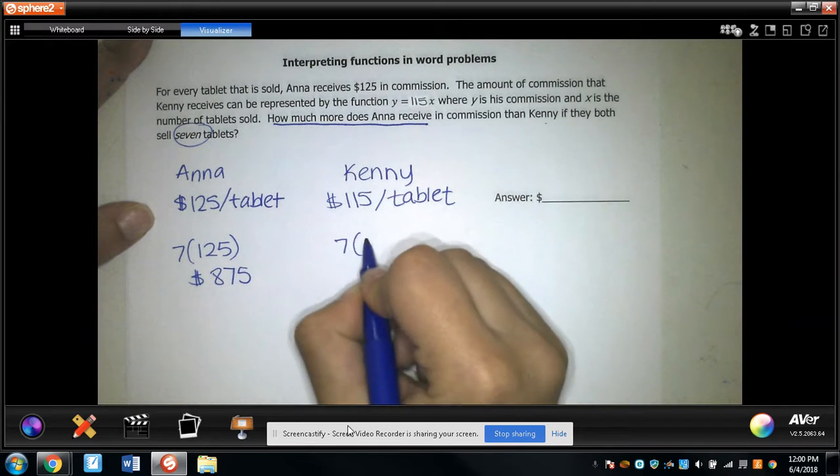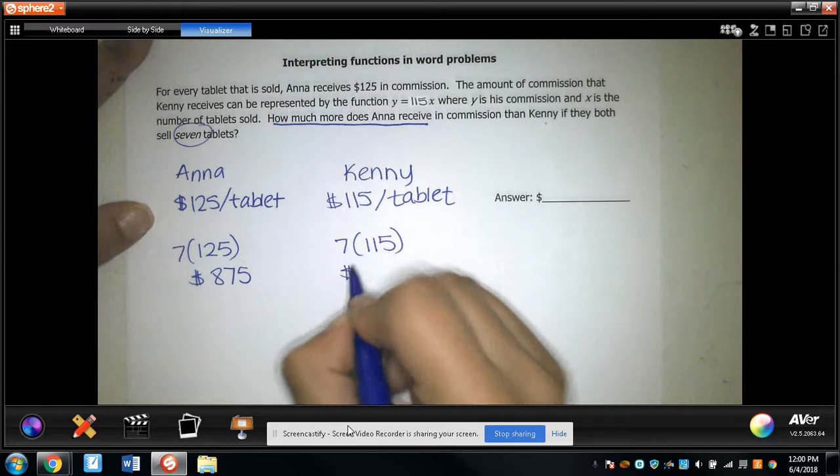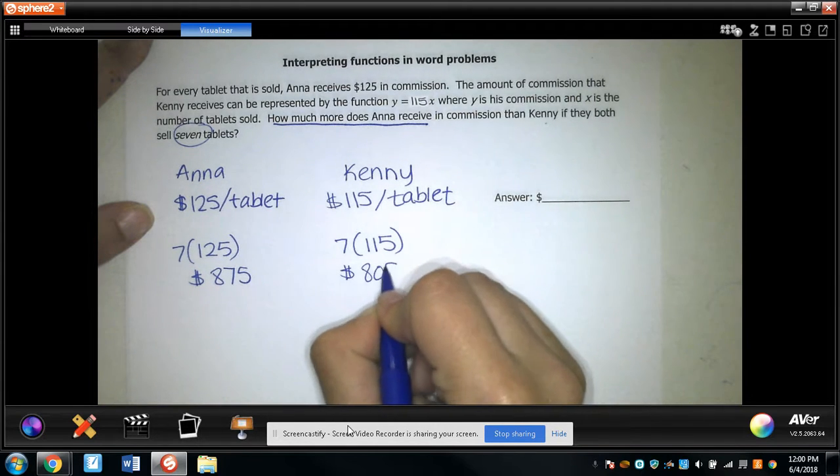And if I have seven tablets and I make $115 for every one that I sell, I'll make, if I multiply, $805.